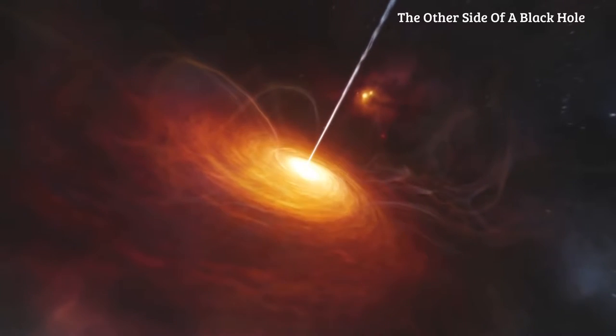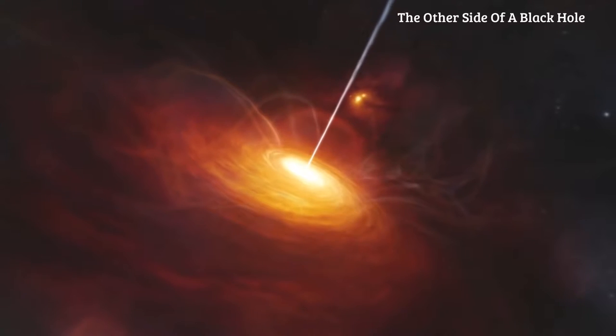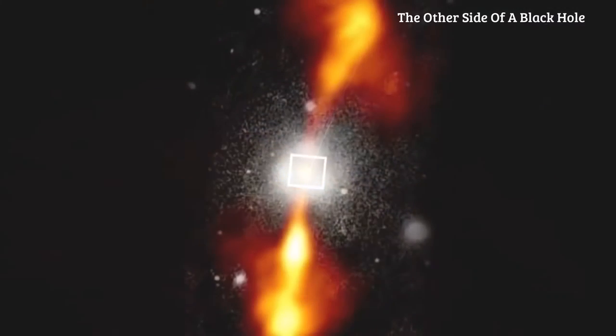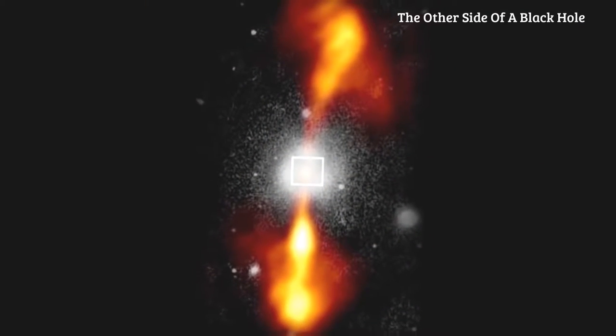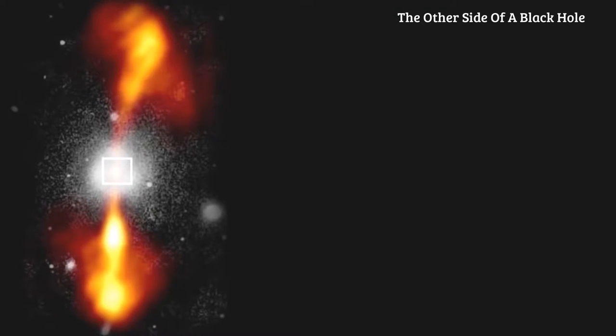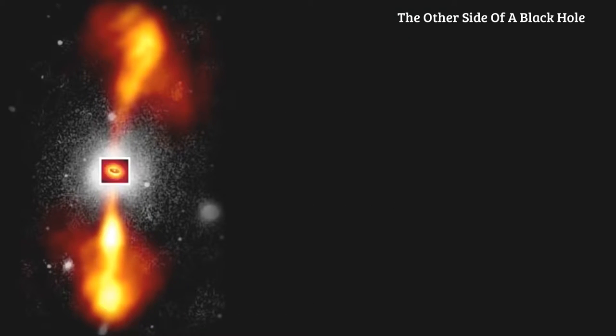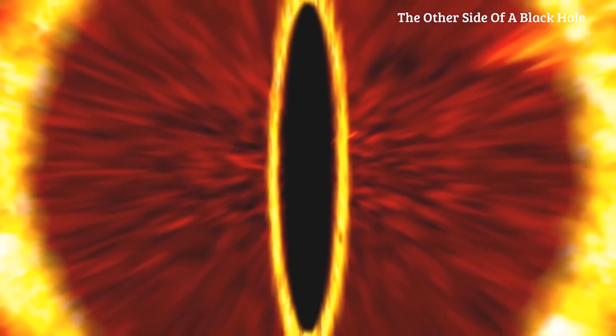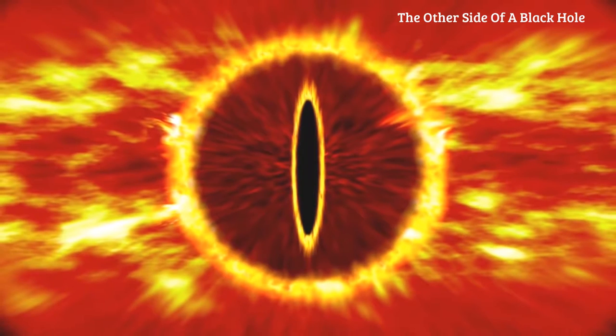The brightest and most active quasars are probably consuming matter at a high rate. In this Hubble image, we see a radio jet coming out of the center of a galaxy. Zooming in, we see the accretion disk and a dark central region. Like Sauron in his dark tower, black holes are known for being terrifying invisible sources of death and destruction.